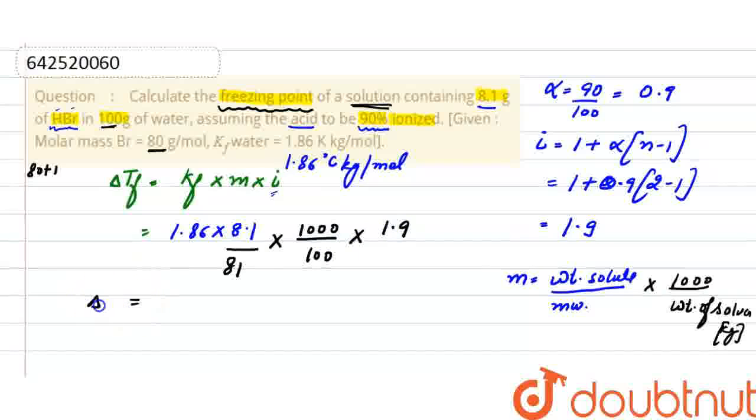After solving, ΔTf = 3.53°C. But we need to find the freezing point of the solution. We know that ΔTf = freezing point of solvent (0°C) minus freezing point of solution.